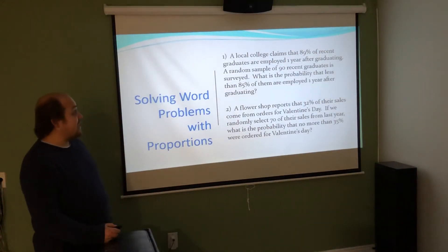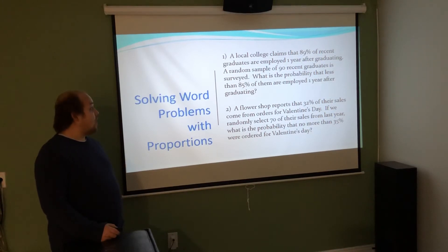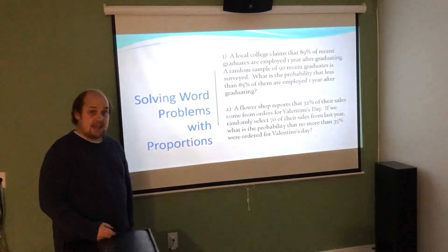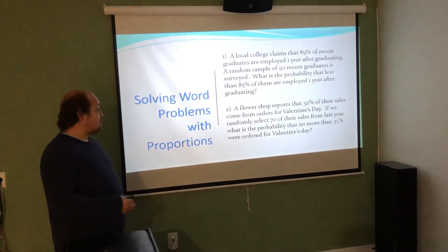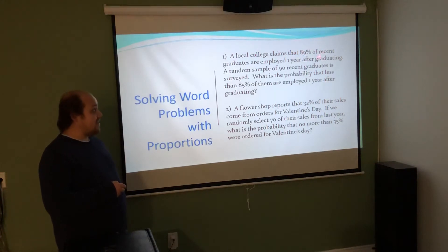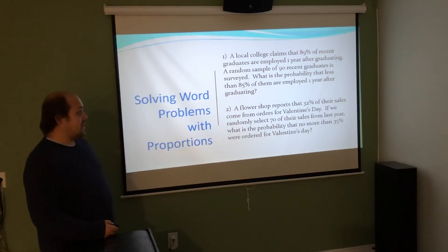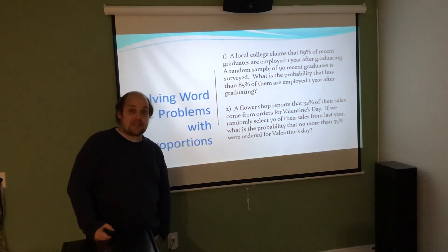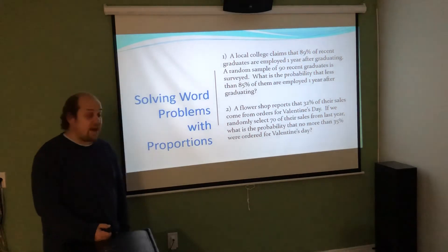A local college claims that 89% of recent graduates are employed one year after graduating. A random sample of 90 recent graduates is surveyed. What's the probability less than 85% are employed one year after graduating? In this case, 0.85 is going to be our p hat. We're trying to say, what's the probability less than 85%? That means I need to take 0.85 minus the mean they've been given of 0.89 divided by the whole standard deviation calculation using this 89, so the root of 0.89 times 1 minus 0.89 over 90. When I do all that, I'll get a z-score that will take me to a probability in the table that is the correct answer to a less than question.